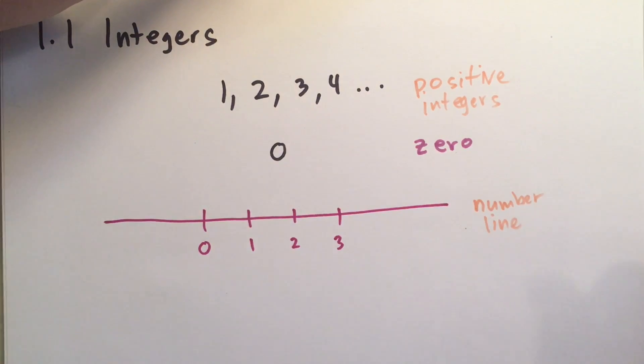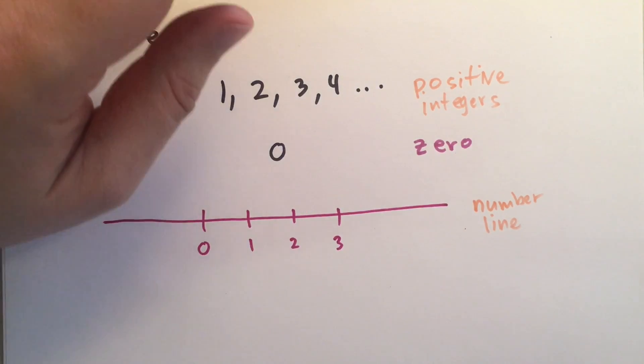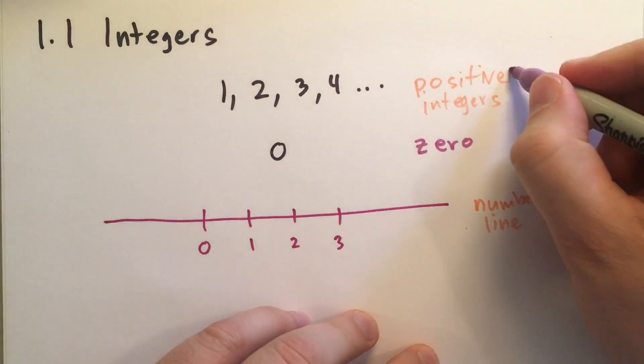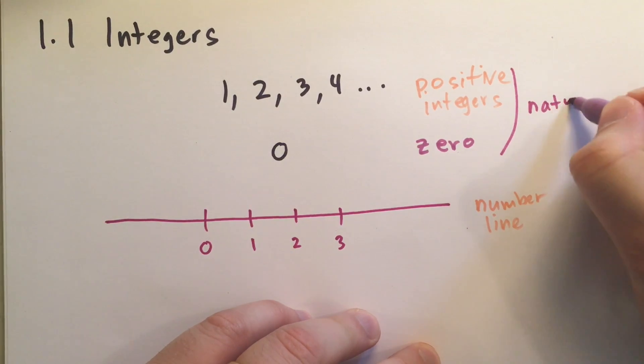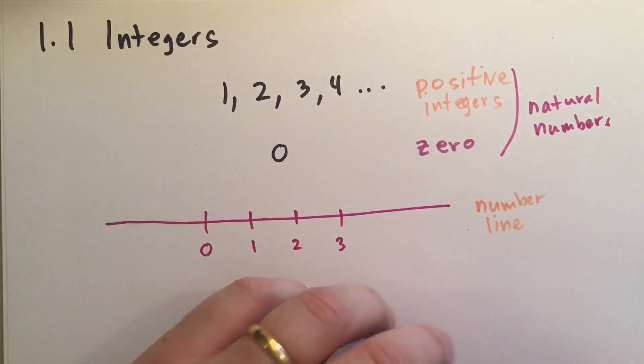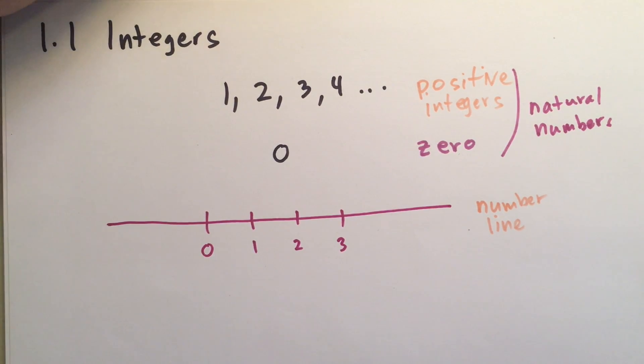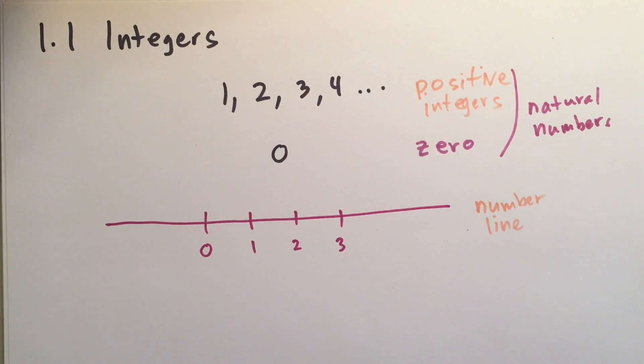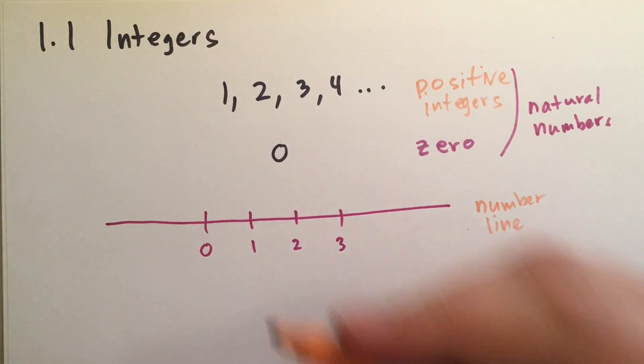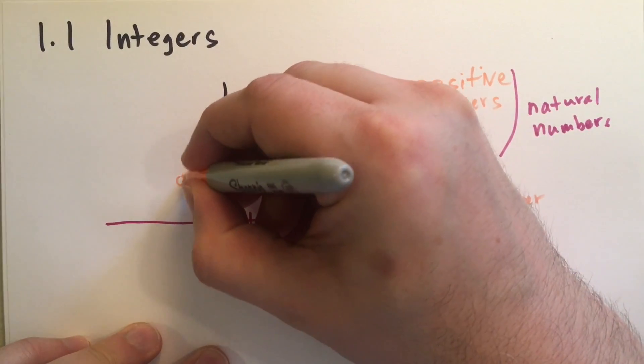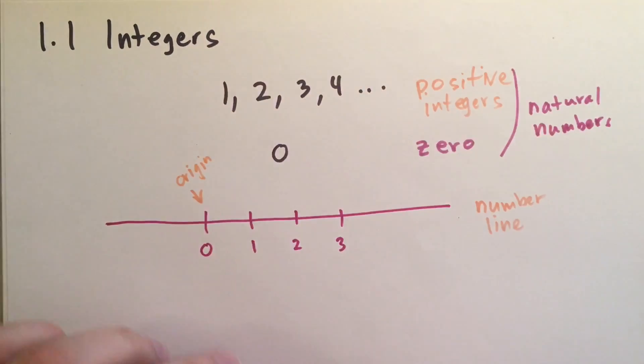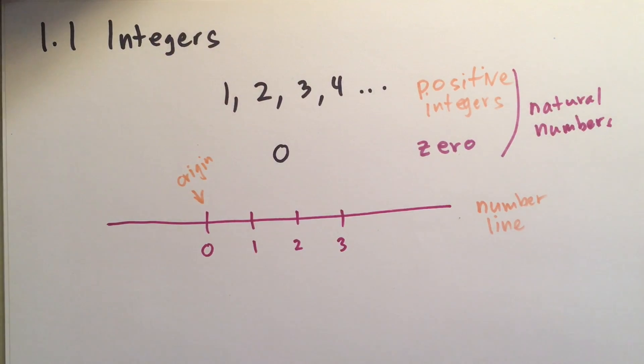The 0 and the positive numbers together, we call these the natural numbers. Why we call them that? Because they arise naturally a lot. Don't get too concerned about the names we choose for things. It's not terribly important. We just give them names to make sure that they're different and we know what we're talking about when we talk to each other. This special point here, where the 0 is, we call that the origin. We'll be talking about the origin a lot all throughout math.